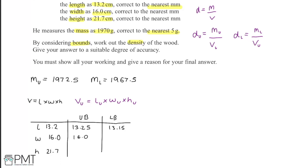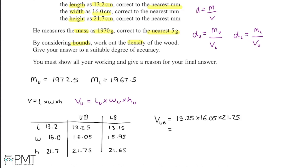The bounds for each dimension are: length 13.25 / 13.15, width 16.05 / 15.95, height 21.75 / 21.65. The upper bound for volume is 13.25 × 16.05 × 21.75 = 4625.4 cm³ (to 1 d.p.). The lower bound for volume is 13.15 × 15.95 × 21.65 = 4540.9 cm³ (to 1 d.p.).